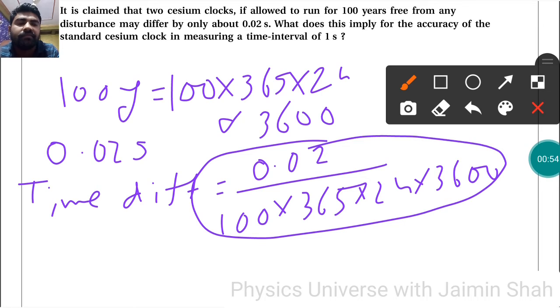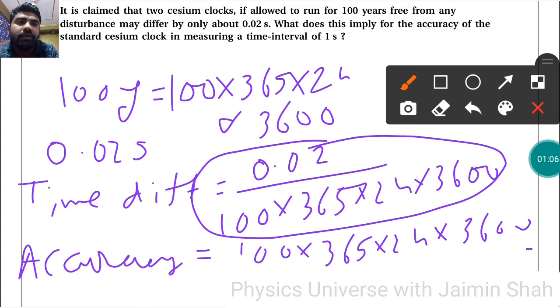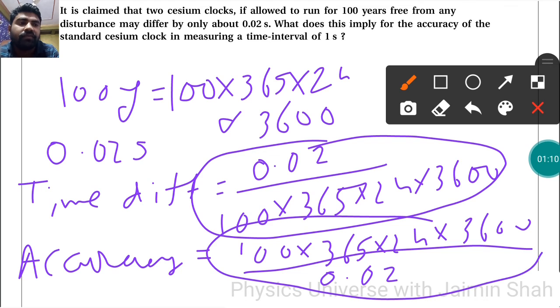That answer is the time difference. Now to find accuracy, we calculate 100 times 365 times 24 times 3600 divided by 0.02. The reciprocal of time difference gives us the accuracy in one second.